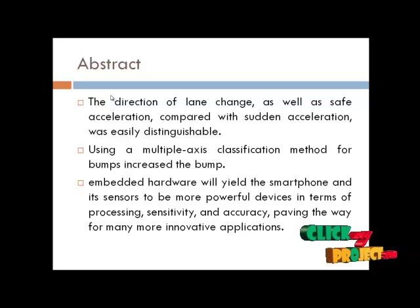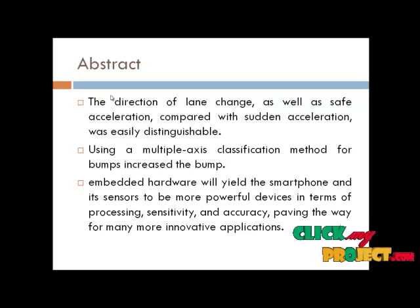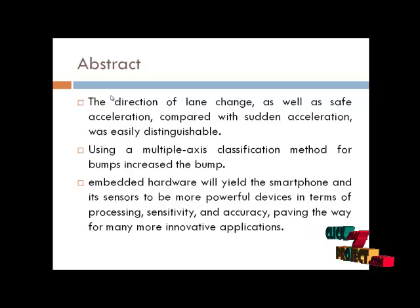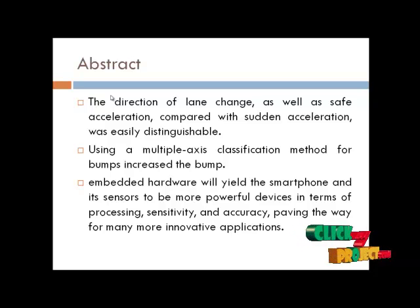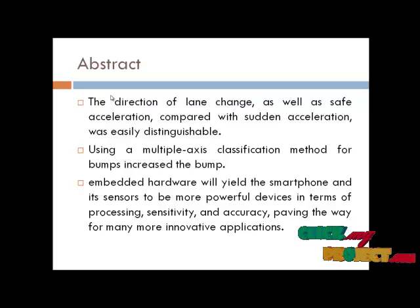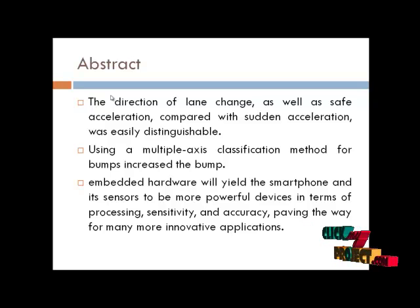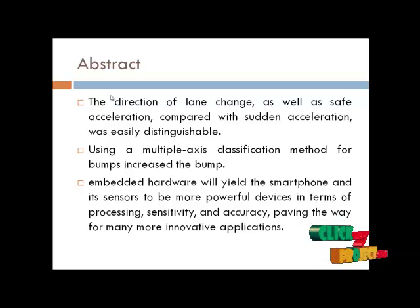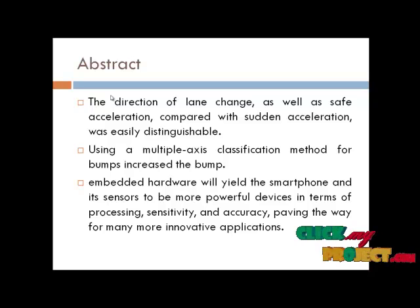In the Android application, we first get the current location. We check the source and destination. When you start the application with distance or speed, the source will be automatically taken. When you stop the process, the destination mode will be closed. The user's travelling mode is activated and the application runs during travelling time.